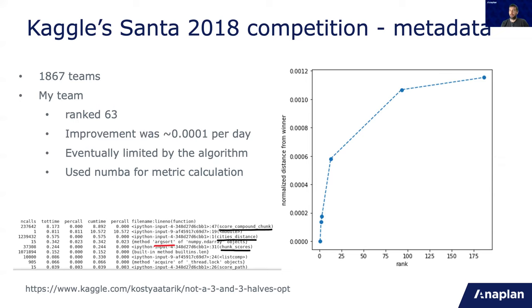And we used NumPy for the metric calculation. Perhaps if we used CuPy or CUDA, we could have had faster improvement. And we could have ranked a bit higher, which would have been nice. Here is also a profiling of the code that we ran. Also, the code is part of this notebook created by Costa Ataric. Score compound chunk, city's distance, and chunk scores were all implemented in NumPy. And also it takes a bit of time as well, but it only happens when a new solution is found. So it decreases over time and it's less significant as time goes on.